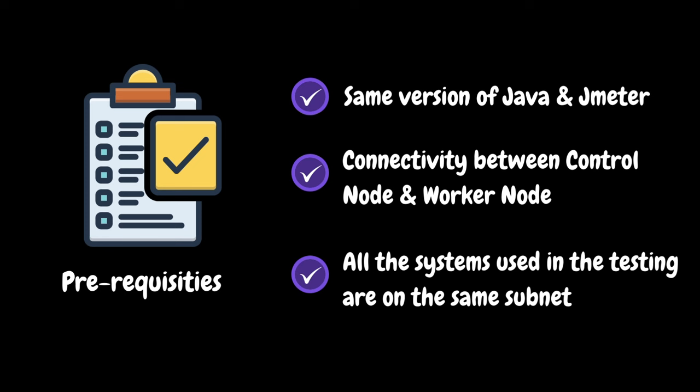We also need to ensure that all the systems used in the testing are on the same subnet. Basically, a subnet is a network inside a network. Through subnetting, network traffic can travel a shorter distance without passing through unnecessary routers to reach its destination.